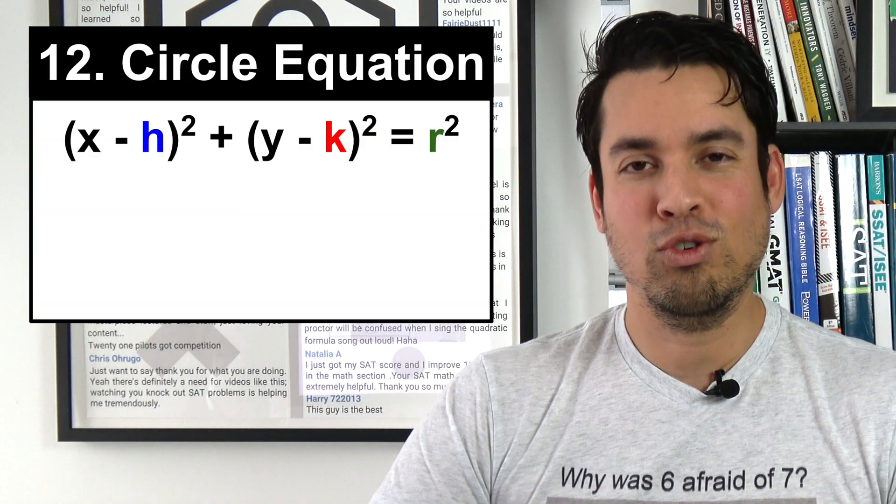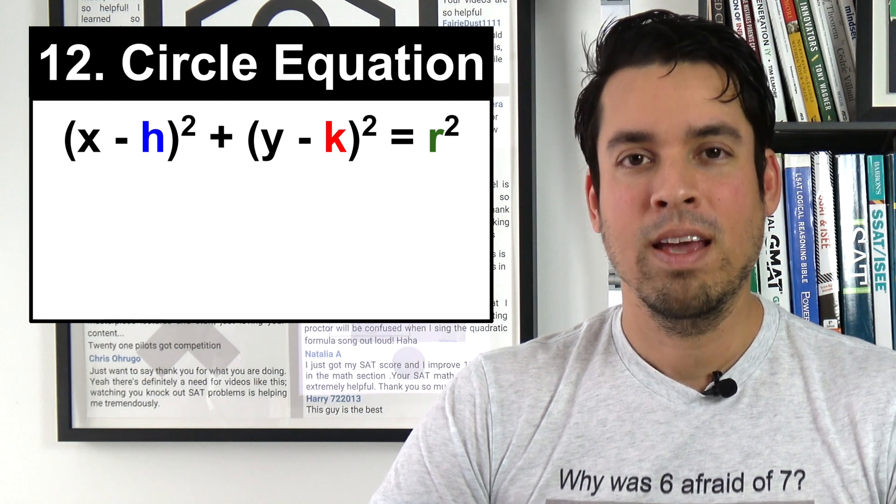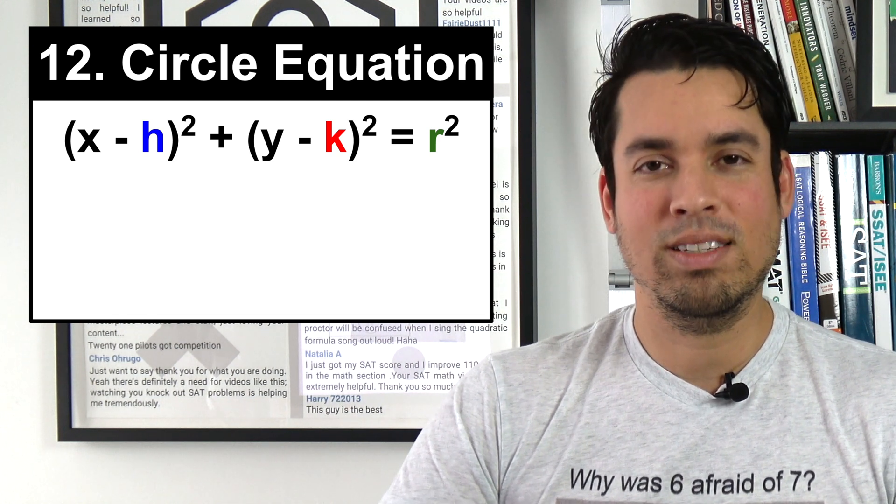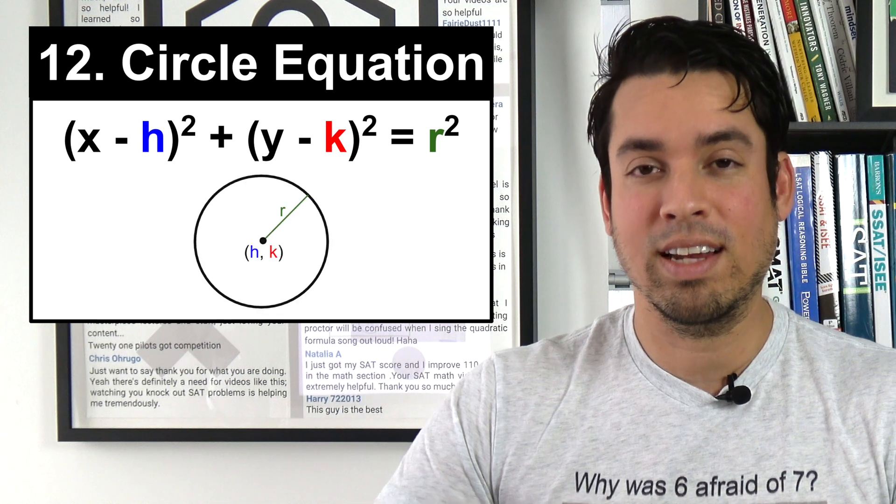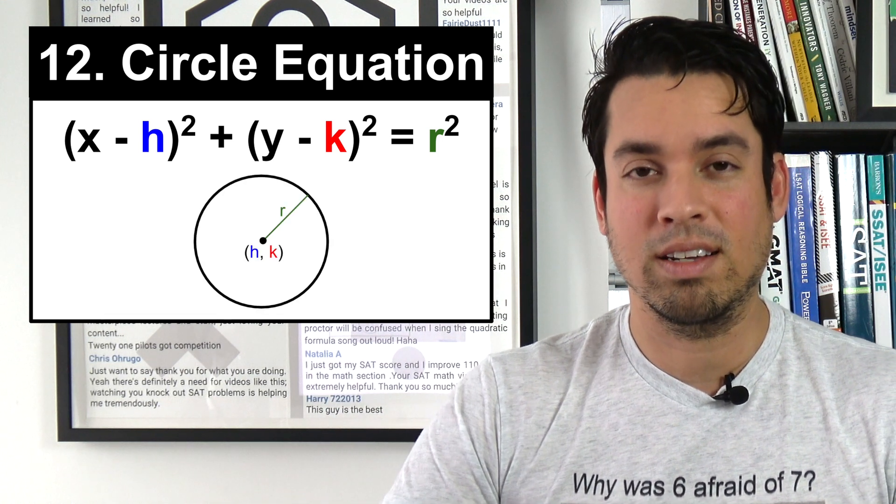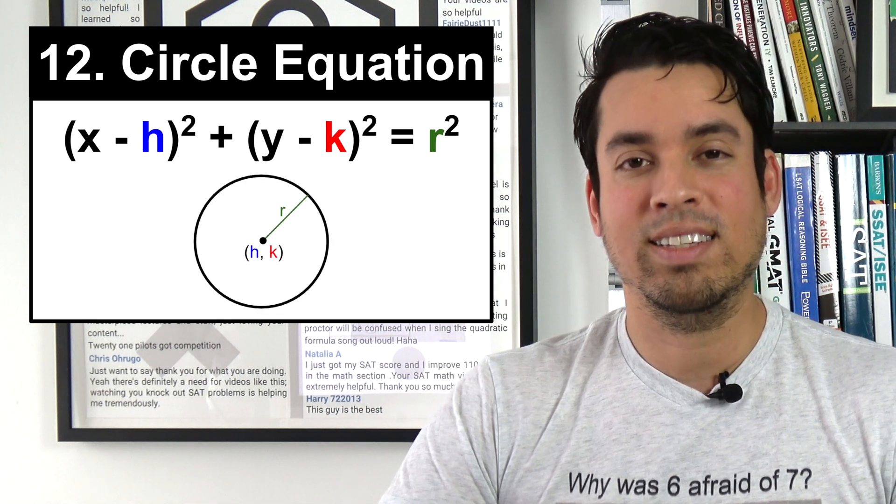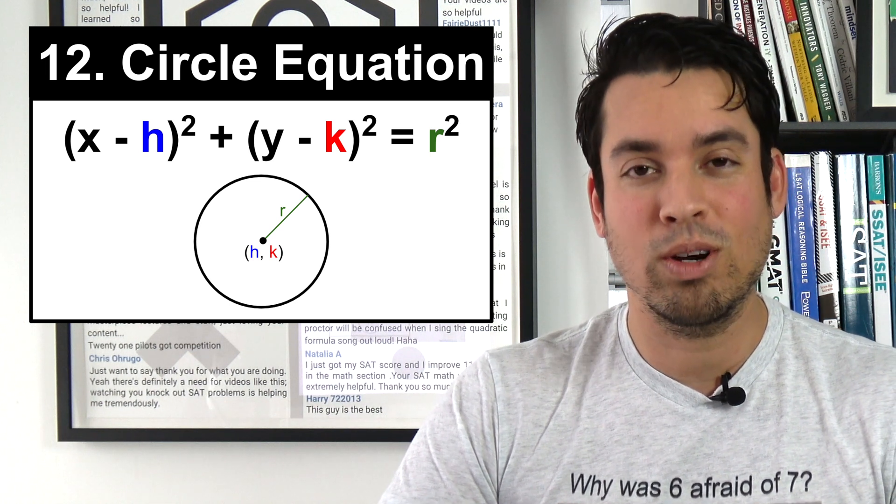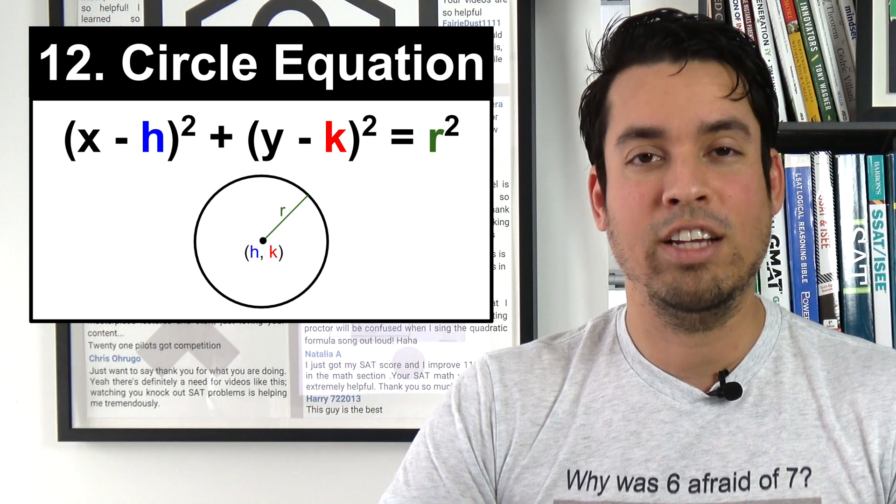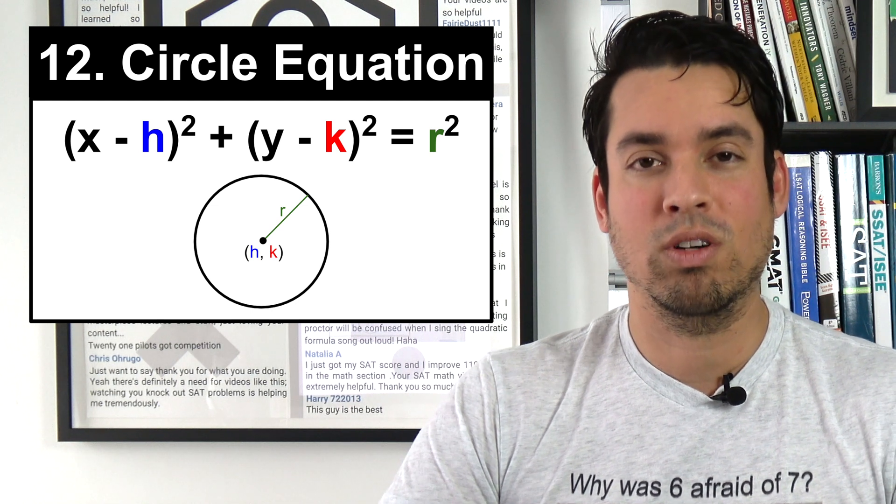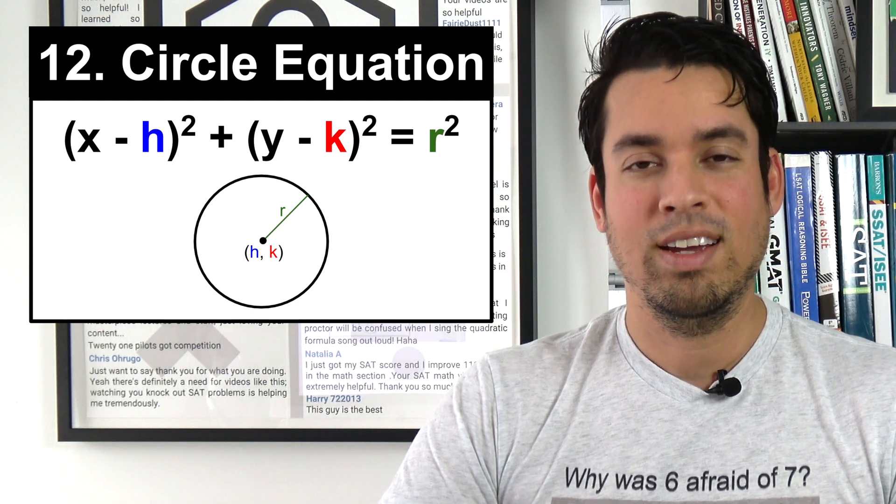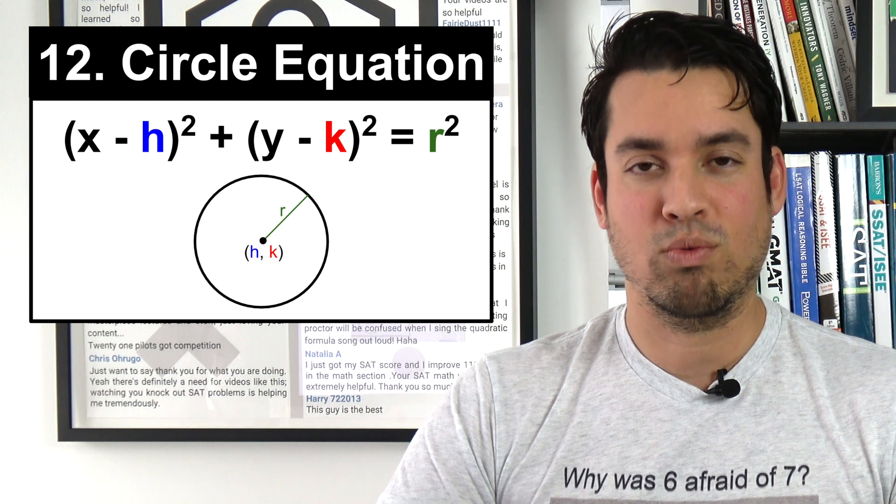Next we have the circle equation on a coordinate plane. They love to test on the nuances and details about how to figure out where's the center and where's the radius based on the equation. So the formula is (x - h)² plus (y - k)² equals r², where h and k represent the center of the circle and that r value represents the radius.